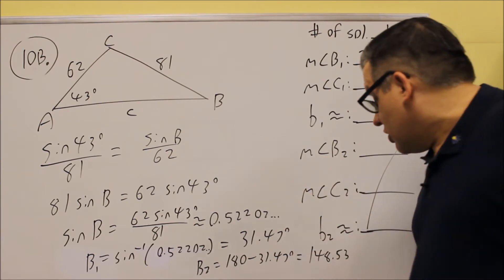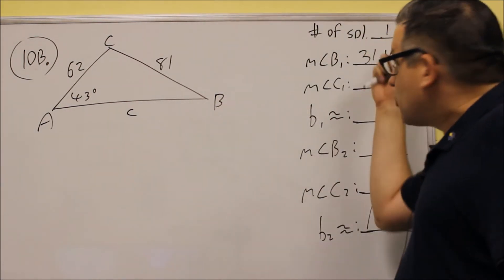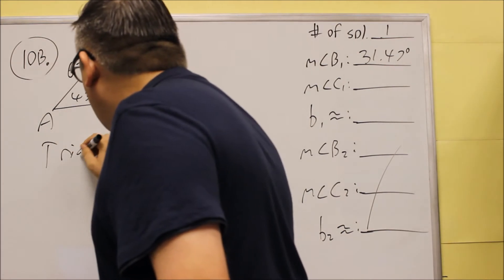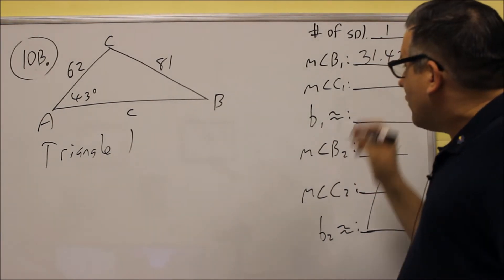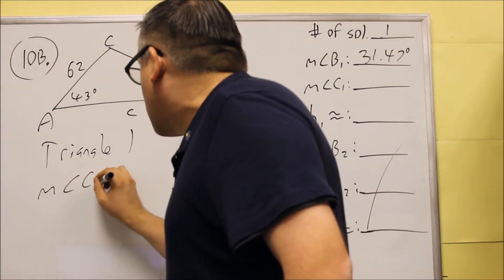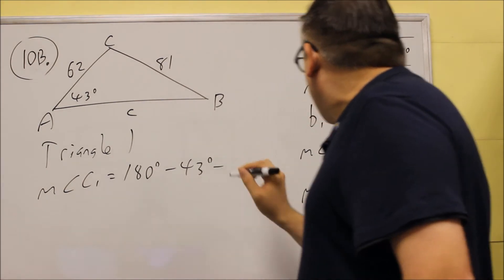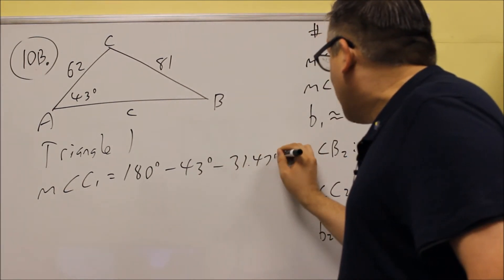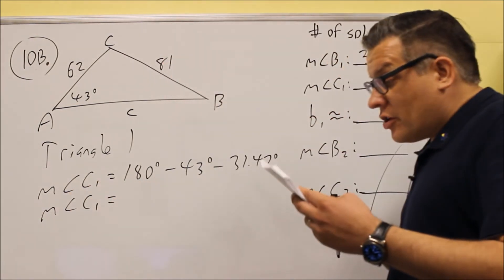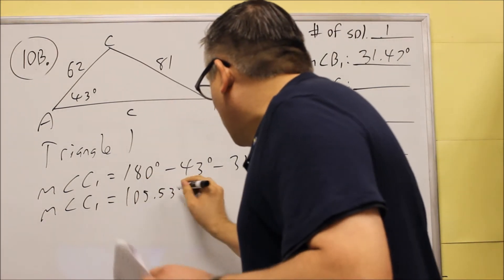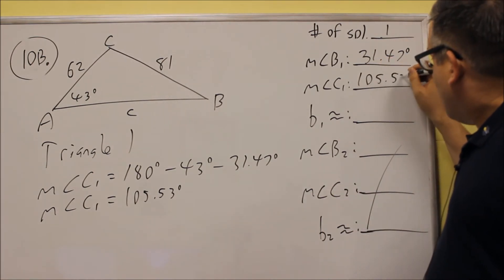Therefore, we're going to set up Triangle 1 only, since we only have one solution. First, we find the missing angle C1. We take 180 degrees — the sum of all angles in a triangle — and subtract the 43 degrees and the 31.47 degrees. That gives us angle C1, which is 105.53 degrees.